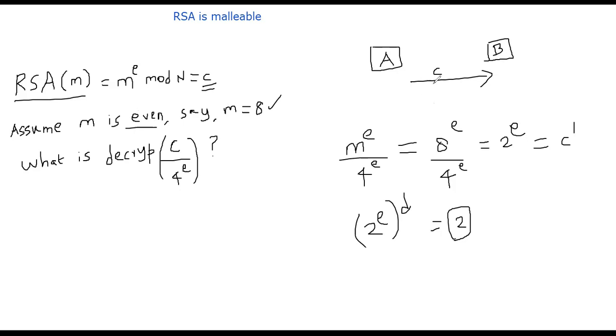But the attacker has actually modified the c and replaced it by c prime. And when Bob decrypts it, he gets back 2 as opposed to 8. This is called the malleability property.